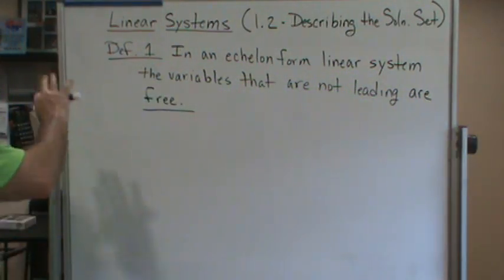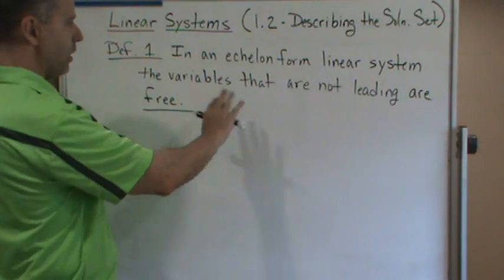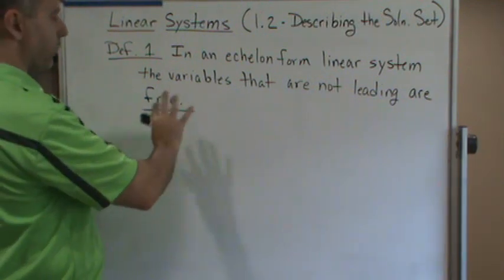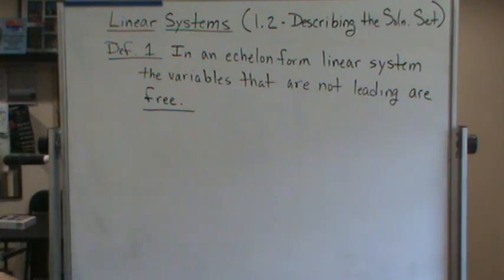So definition one here says that in an echelon form linear system—so again, we're assuming that we've row reduced the system so that it's in echelon form—the variables that are not leading are called free variables.